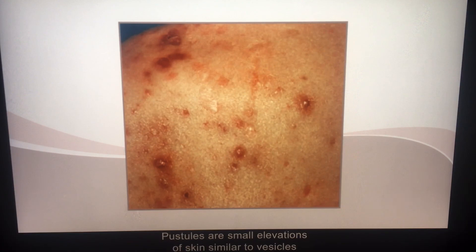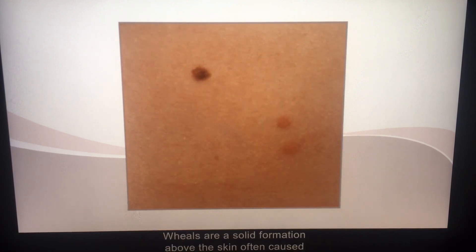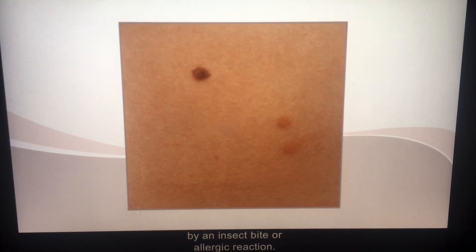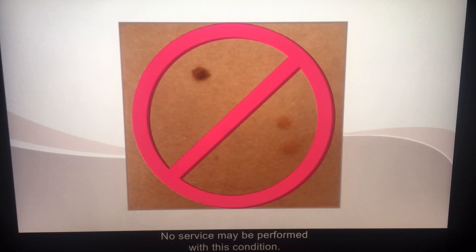Pustules are small elevations of skin similar to vesicles in size and shape but which contain pus; a pimple with pus is an example. Wheals are a solid formation above the skin, often caused by an insect bite or allergic reaction. Hives, also called urticaria, are an example of wheal lesions. No service may be performed with this condition.